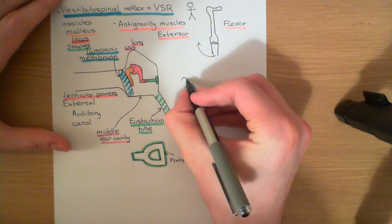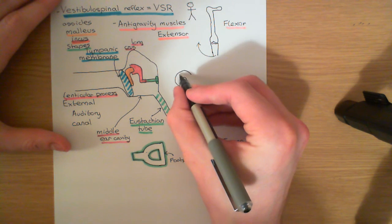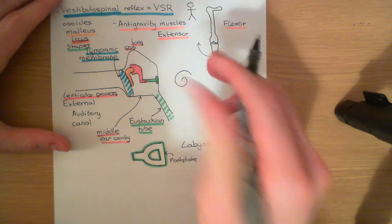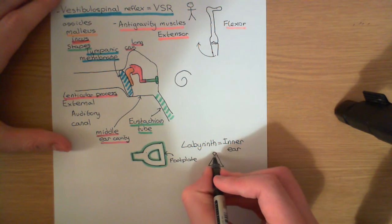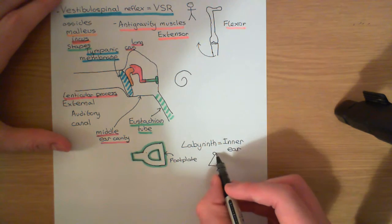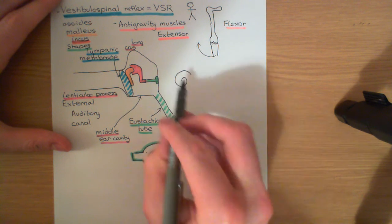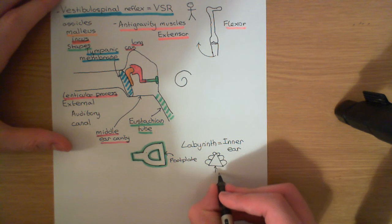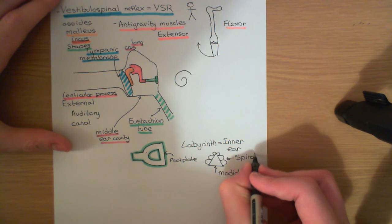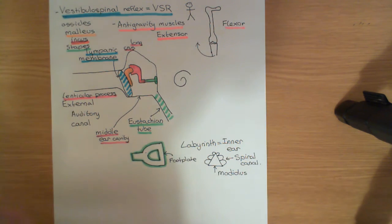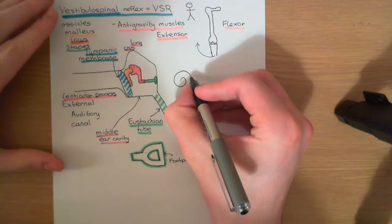From the front, the cochlea looks like this: the spiral canal starts and goes back and round. In cross-section you can see multiple loops of the tube as it spirals around. The central cone of bone is the modiolus, and wrapped around it is the spiral canal. The spiral canal wraps approximately two and a half times around the modiolus to form the cochlea.